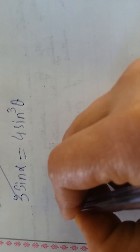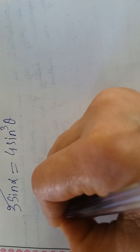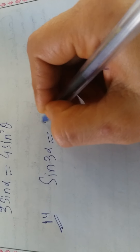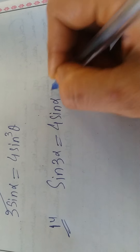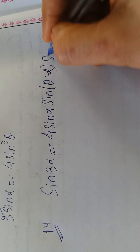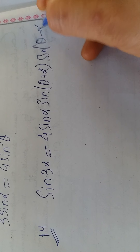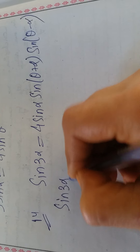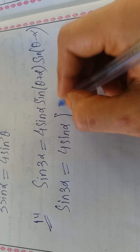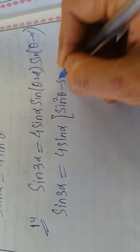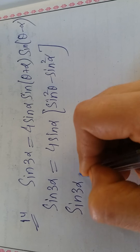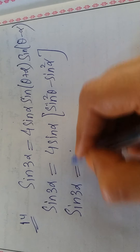Question number 14: sin3α equals 4sinα · sin(θ+α) · sin(θ-α). Using the formula sin(A+B)·sin(A-B) = sin²A - sin²B, we can write the right side as 4sinα · (sin²θ - sin²α).